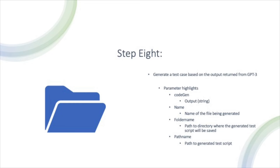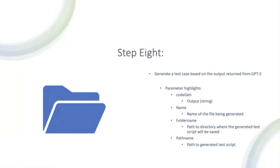Finally, in step eight, we need to generate our test case based on the output returned from GPT-3. Some of the parameters I want to highlight here are: code gen, which is basically the output converted to a string; the name property, which is the name of the file being generated; the folder name property, which is the path to the directory where the generated test script will be saved; and the path name property, which will be the path to the generated test script.